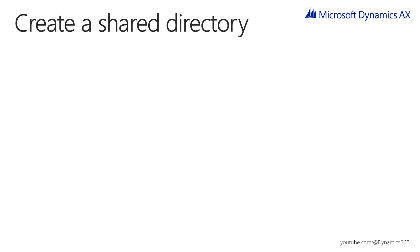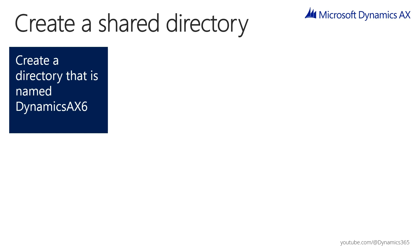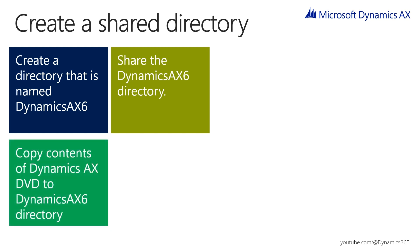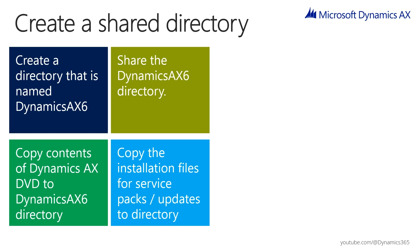To create a shared directory for the contents of the DVD, follow these steps: Create a directory named Dynamics AX 6. Share the Dynamics AX 6 directory. Give the administrator group full control or owner access, and give the everyone group read access. As a security best practice, prevent users from making changes — only read access is required. Copy the contents of the Microsoft Dynamics AX DVD to the Dynamics AX 6 directory, then copy the installation files for service packs and updates to the directory.